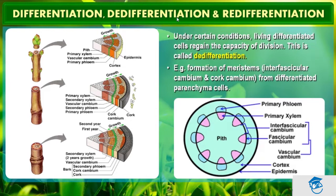For example, the formation of meristems — that is, interfascicular cambium and cork cambium — from fully differentiated parenchyma cells is an example of de-differentiation. This is the epidermis, this is the cortex, this is the fascicular cambium shown as a black line. The region between two fascicular cambia is known as interfascicular cambium. The primary xylem is represented in pink and primary phloem in blue. Together, interfascicular cambium plus fascicular cambium form what we call vascular cambium.